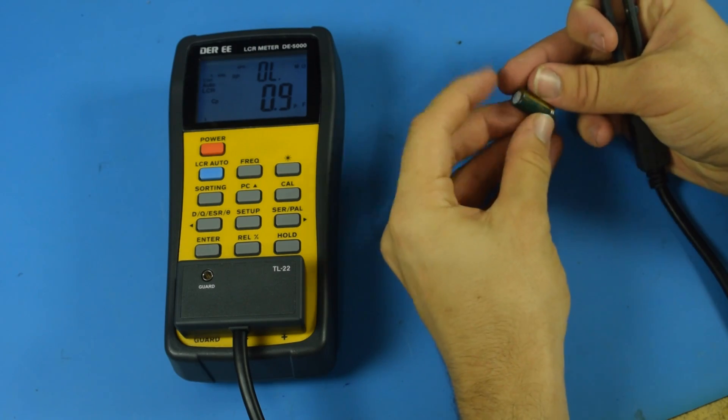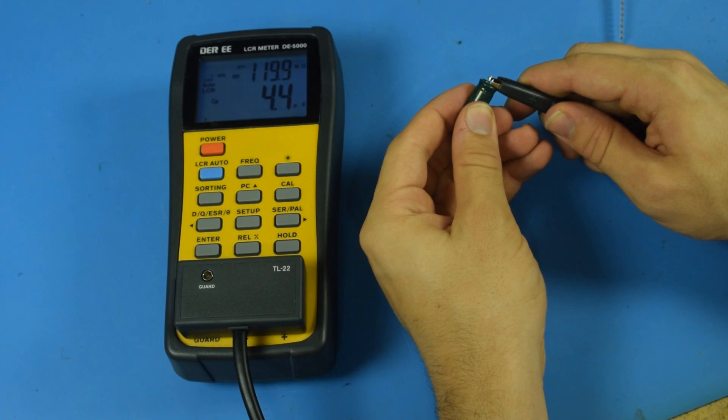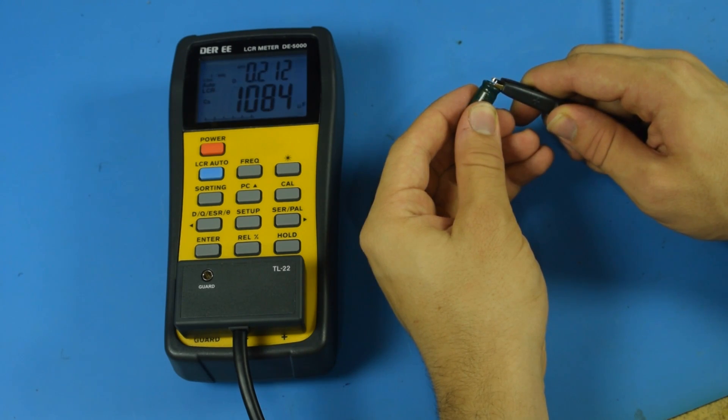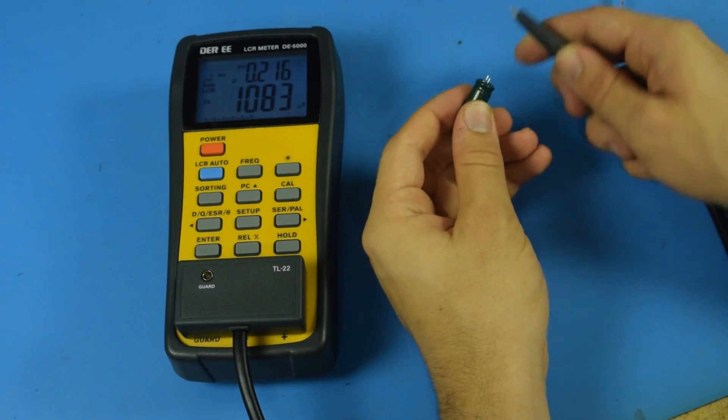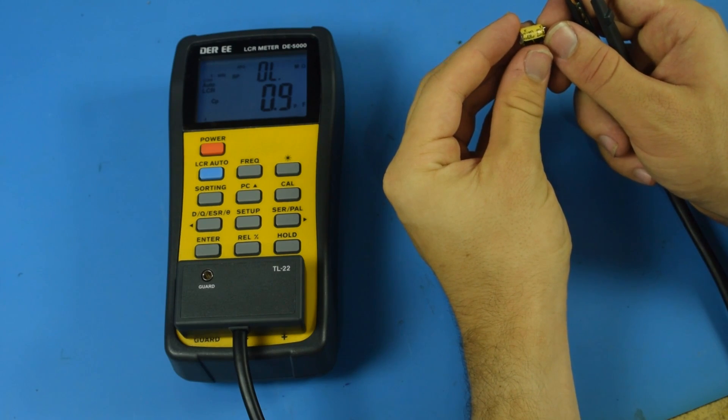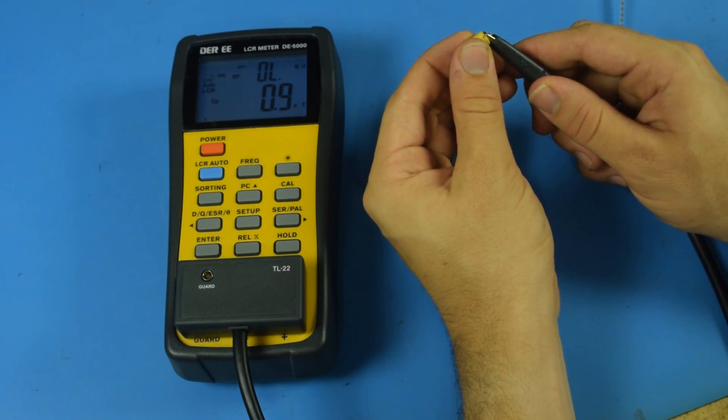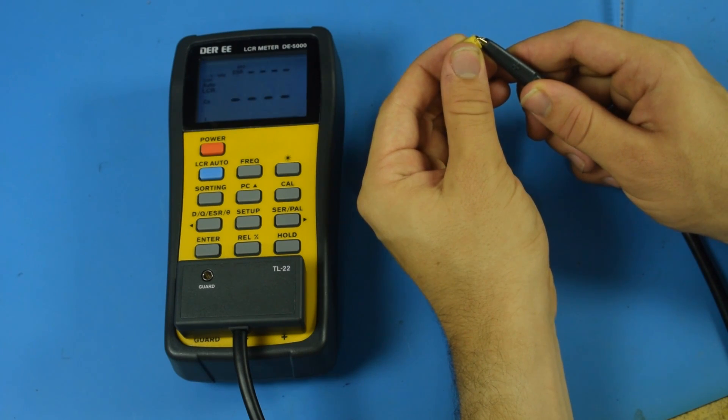All right, big ones here. This is 1200. All right. Man, that 470 sucks. Go for a weird one here. One of these yellow ones. What's this? 820 microfarads. Okay. All right.